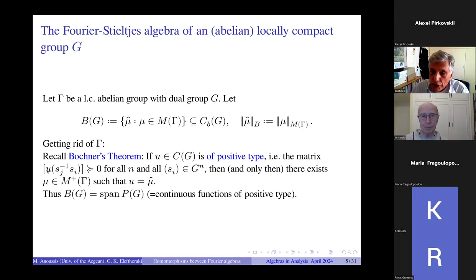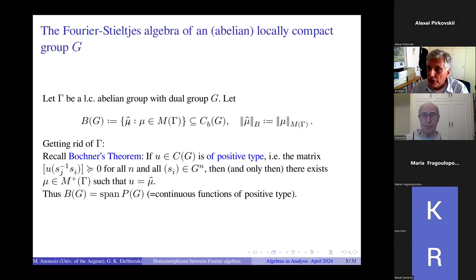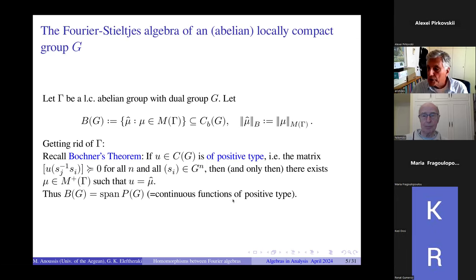Let us recall Bochner's theorem, which one teaches in graduate courses of harmonic analysis — it is very prominent in Katznelson's book. If you have a continuous function that is of positive type — meaning if you form the n×n matrix with entries f(s_j^{-1} s_i), this matrix must be positive semi-definite for all n-tuples of elements — then it is the Fourier transform of a positive measure. This is Bochner's theorem.